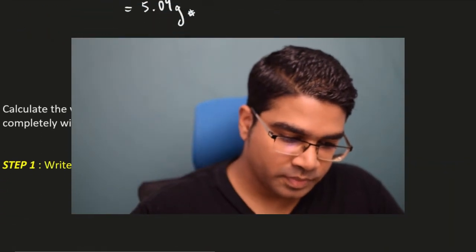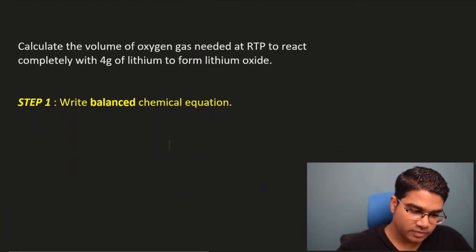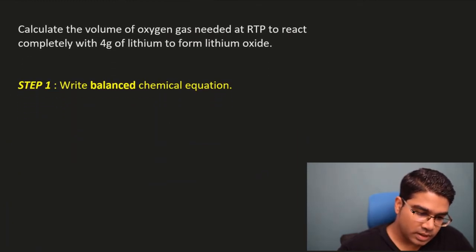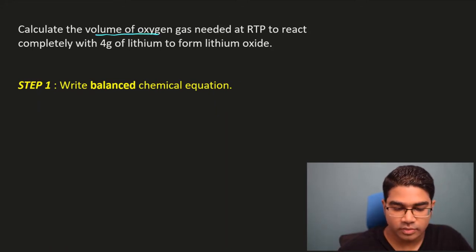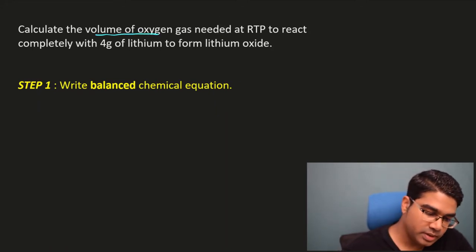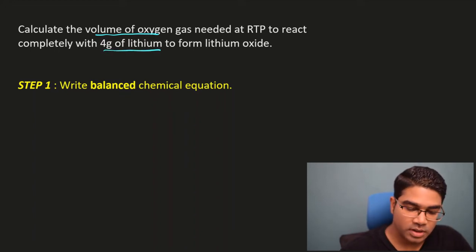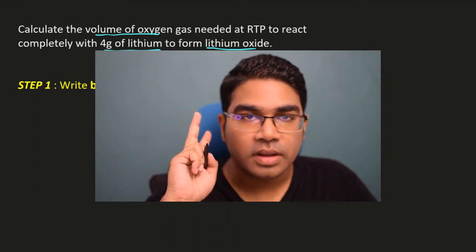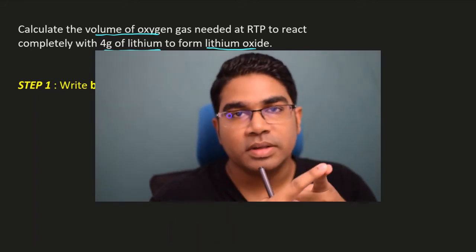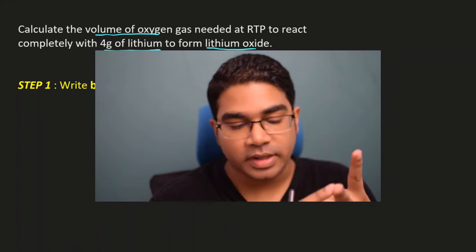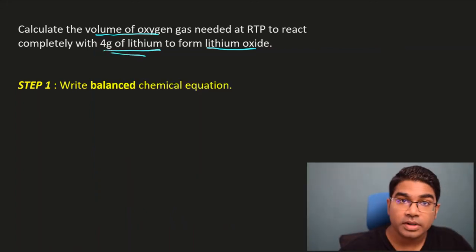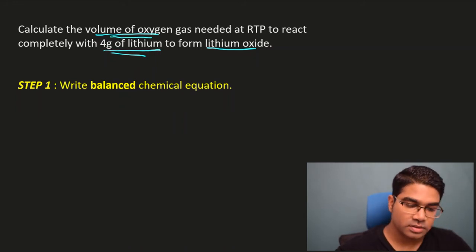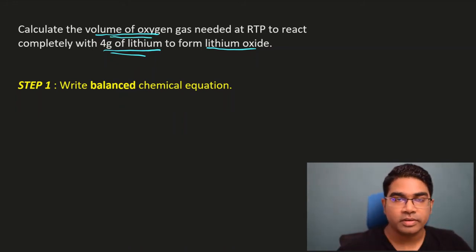Let's try another example. This time involving volume: calculate the volume of oxygen needed at room temperature and pressure to react completely with 4 grams of lithium to form lithium oxide. Again, there are always two things — a given quantity (4 grams of lithium) and the quantity to find (volume of oxygen).